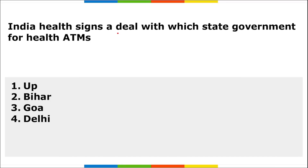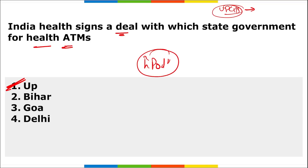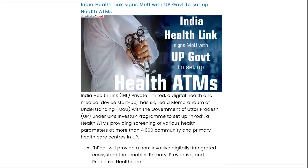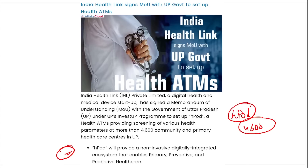Next: India Health Link has signed a deal with which state government for health ATMs? It is the UP government. Indian Health Link — IHL Private Limited — is a digital health and medical device startup that has signed an MOU with the UP government under the UP Invest UP program to set up H-POD, a health ATM providing screening of various health parameters at more than 4,600 community and primary health care centers in UP. The H-POD will provide a non-invasive digitally integrated ecosystem to enable primary, preventive, and productive health care.